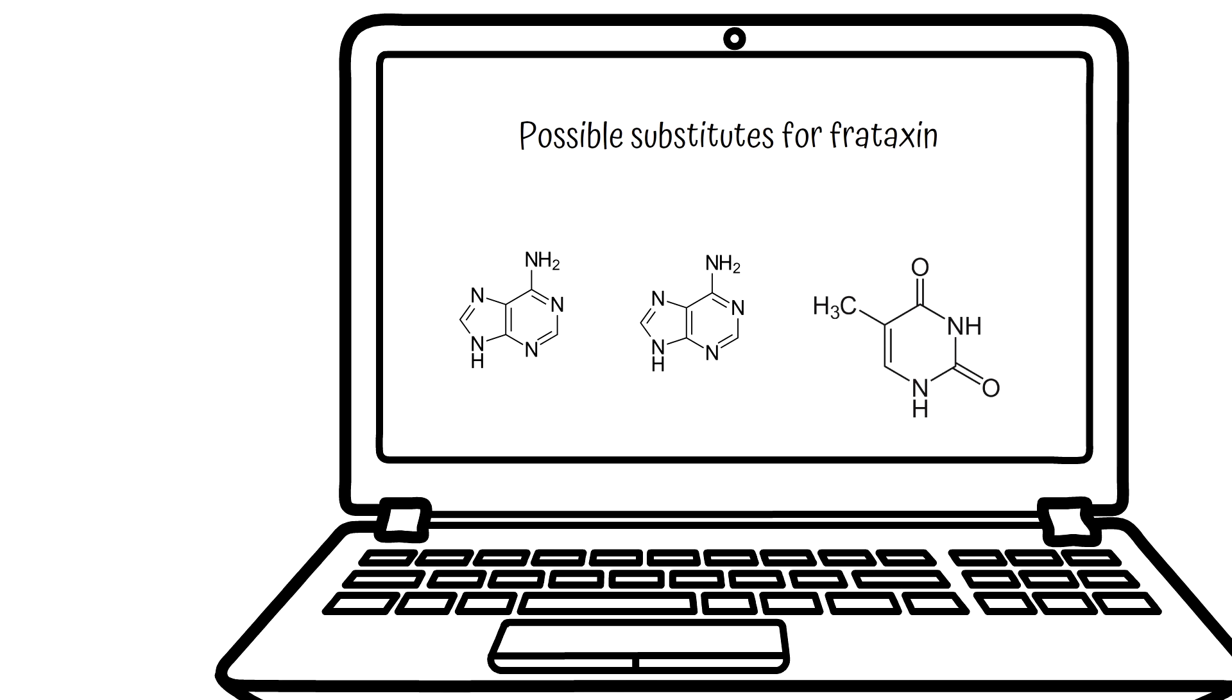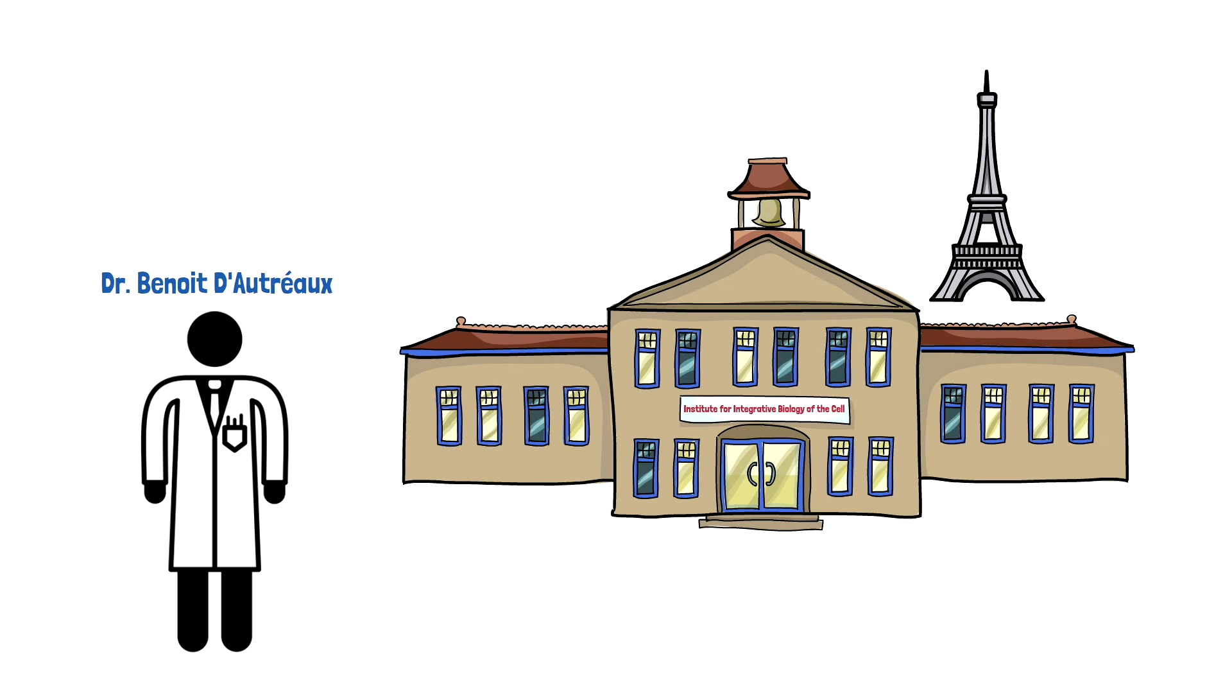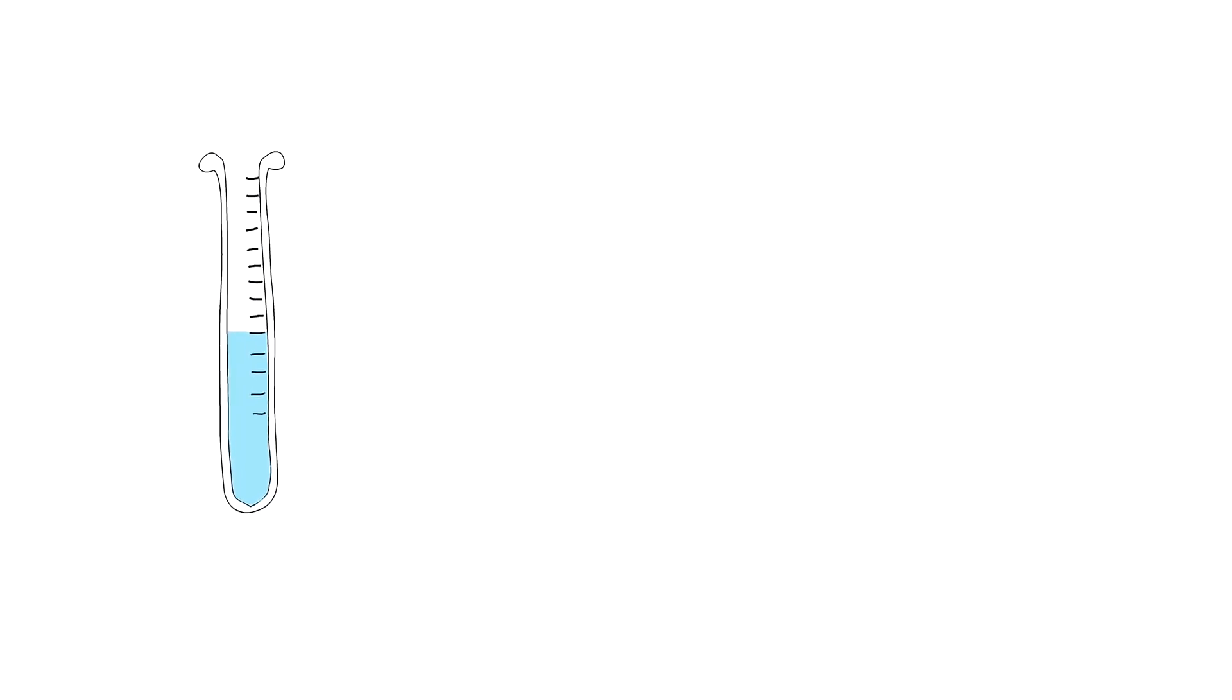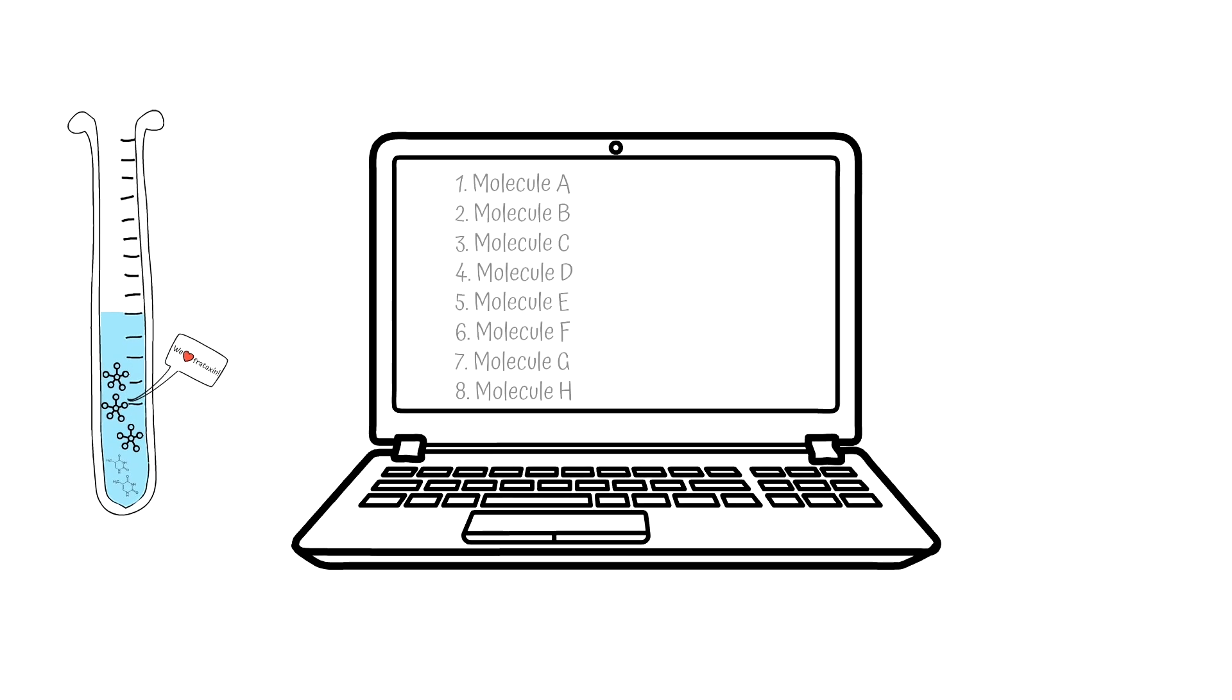FARA is funding multiple investigators to carry out this challenging research. First, Benoit Dautreau and his team at the Institute for Integrative Biology of the Cell in Paris were able to build a system in a test tube that contained all cellular machinery that makes iron-sulfur clusters. He is using this system to see if any of 100,000 molecules could replace frataxin within the system and allow iron-sulfur complexes to be made and function normally without frataxin.